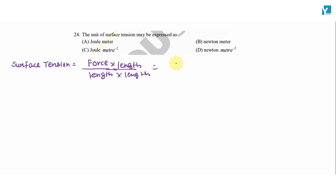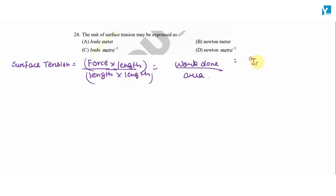We can also write this as work done per unit area, because force into length in the numerator and length in the denominator gives us area. This can be written as Joule per meter square. Now looking at the options, the correct answer can be identified.